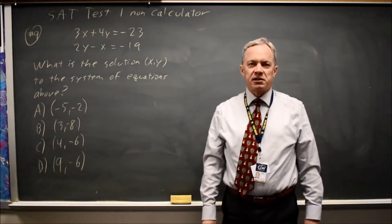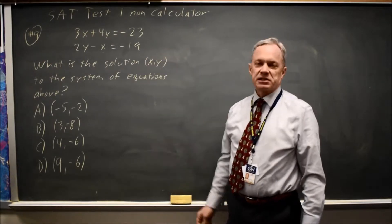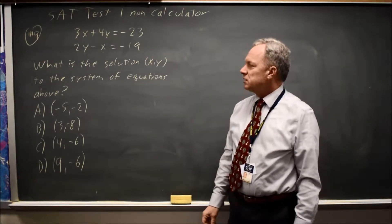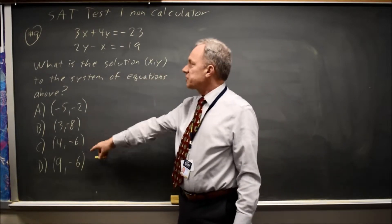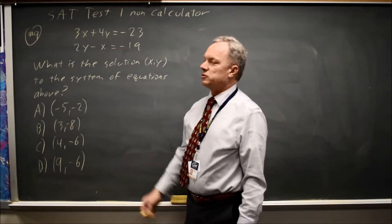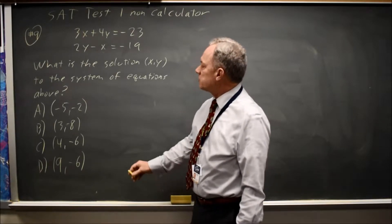This is SAT test 1, non-calculator question number 9. College Board gives you a system of equations and asks for the solution, x, y, to the system. By solution, they mean values of x and y that make both equations true. The easiest way to solve this is to substitute in the values in the choices.